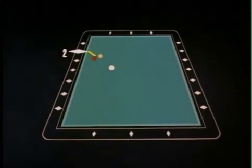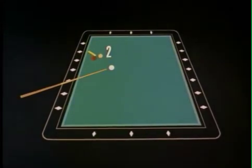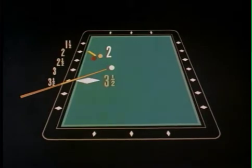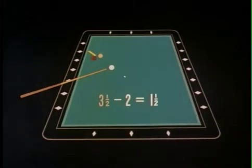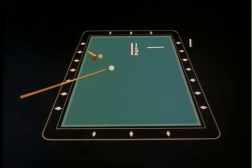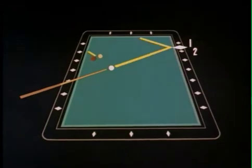Natural angle, two. Cue position, one and a half, two, two and a half, three, three and a half. Two from three and a half is one and a half. So shoot halfway between the first and second diamonds.